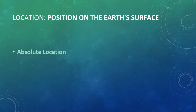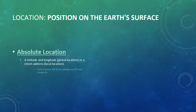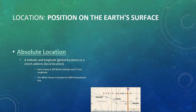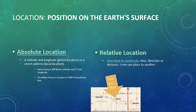Location refers to position on the earth's surface. Absolute location is a latitude and longitude global location, or a street address for a local location — for example, part of France is 48 degrees north latitude and two degrees east longitude, and the White House is located at 1600 Pennsylvania Avenue. Relative location is described by landmarks, time, direction, or distance from one place to another — for example, 'go one mile west on Main Street and turn left for one block.'